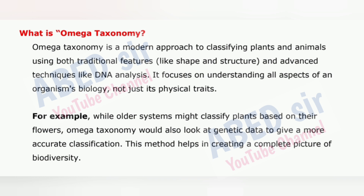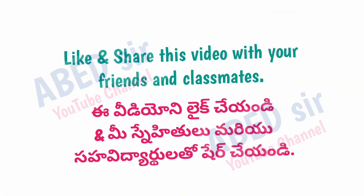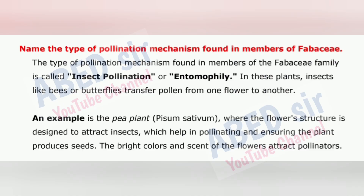Next important question: Name the type of pollination mechanism found in members of Fabaceae. The type of pollination mechanism found in members of the Fabaceae family is called insect pollination or entomophily. In these plants, insects like bees or butterflies transfer pollen from one flower to another. An example is the pea plant (Pisum sativum), where the flower's structure is designed to attract insects, which help in pollinating and ensuring the plant produces seeds. The bright colors and scent of the flowers attract pollinators.